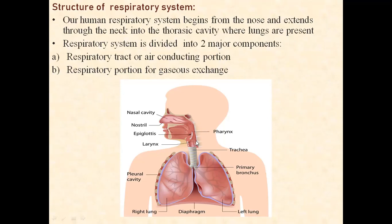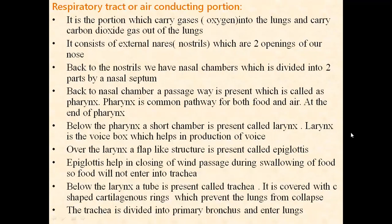This is the esophagus, which is the food pipe. This is a common pathway — when we eat food, the epiglottis covers the larynx so that food will not enter into the trachea.